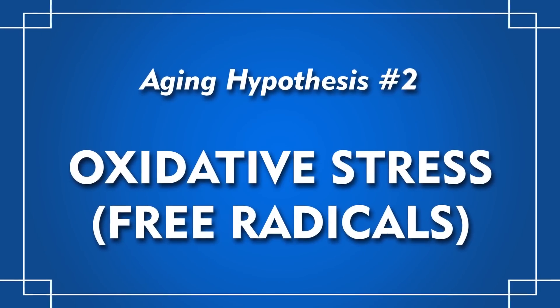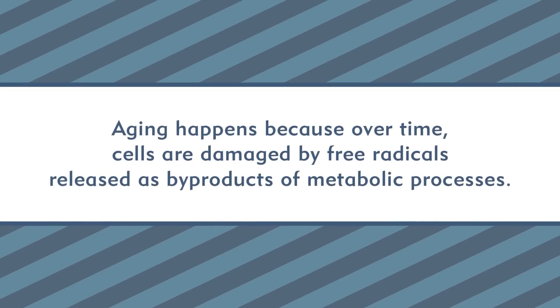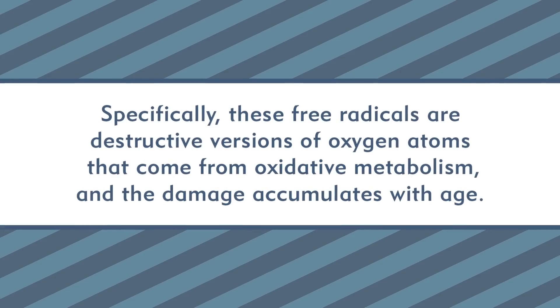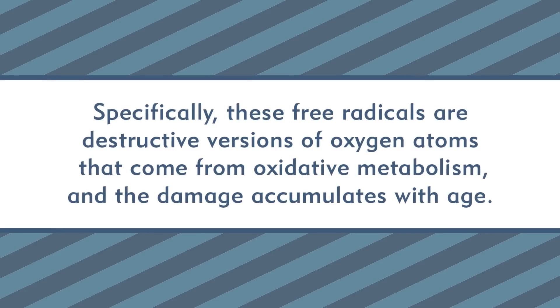For example, it turns out that birds actually have much faster metabolisms than mammals of the same size, and yet birds live longer. So another theory came along: the oxidative stress, or free radical hypothesis. Aging happens because over time, cells are damaged by free radicals released as byproducts of metabolic processes. Specifically, these free radicals are destructive versions of oxygen atoms that come from oxidative metabolism, and the damage accumulates with age. But much like the rate of living hypothesis, the oxidative stress hypothesis also runs into issues with conflicting new datasets and experiments.